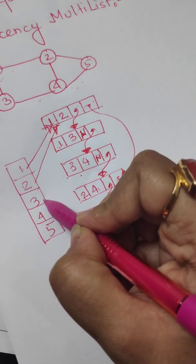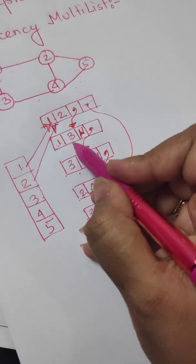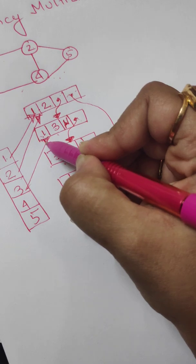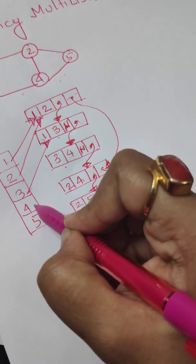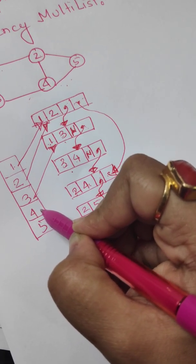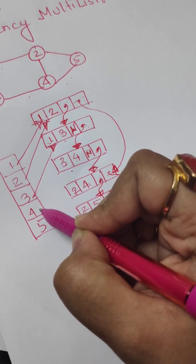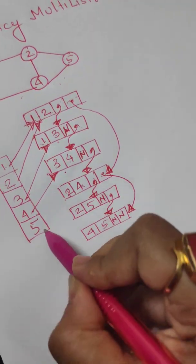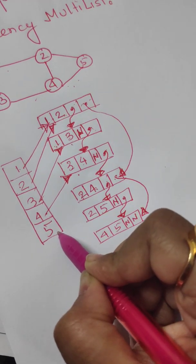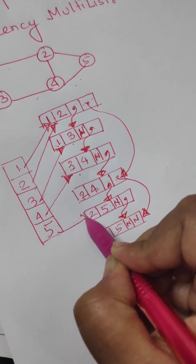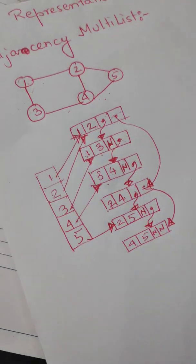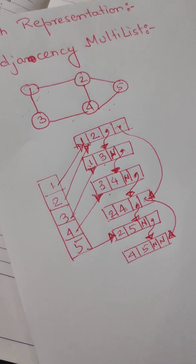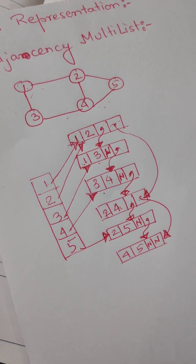Coming back to the list of vertices: vertex two will point at the first edge that has two as an entry. Vertex three will point at the first edge with three as an entry. Vertex four will point at the first edge with four as an entry. Vertex five will point at the first edge with five as an entry. This is how an undirected graph is represented using an adjacency multi-list.